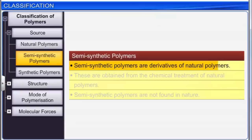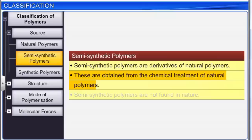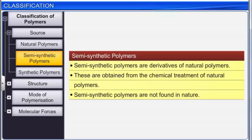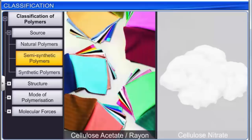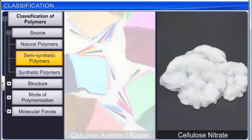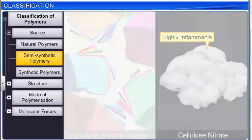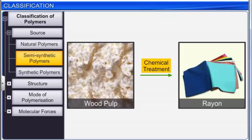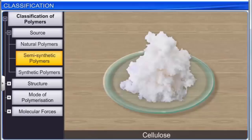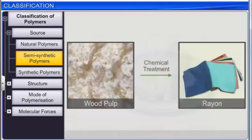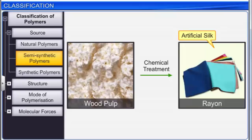Semi-synthetic polymers are derivatives of natural polymers obtained through chemical treatment. They are not found in nature. Examples include cellulose acetate and cellulose nitrate, which is highly inflammable. Rayon, obtained by the chemical treatment of wood pulp — which contains the natural polymer cellulose — resembles silk in appearance, and hence it is also referred to as artificial silk.